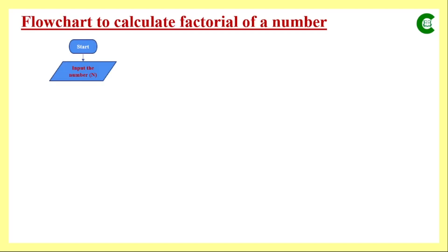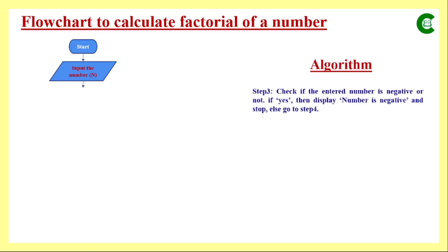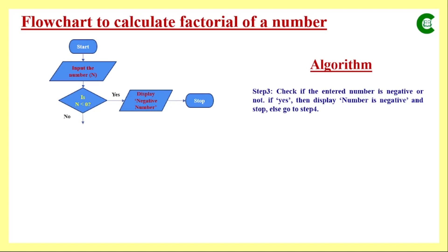Now we will see the 2D representation of this algorithm — the flowchart. We start the process, then use the input symbol to enter the number whose factorial we want. Then we check whether n is less than 0. If true, the number is negative and we stop. If false — meaning n is 0 or positive — we proceed to Step 4.